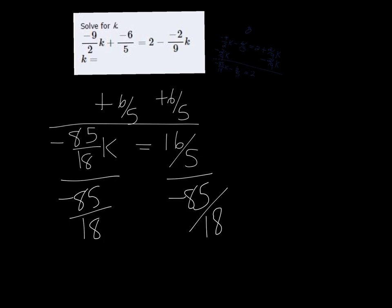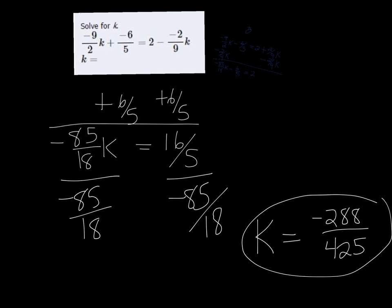16 fifths divided by negative 85 over 18. That is negative 288 over 425. If you've done it in your calculator, then it's already going to be simplified.